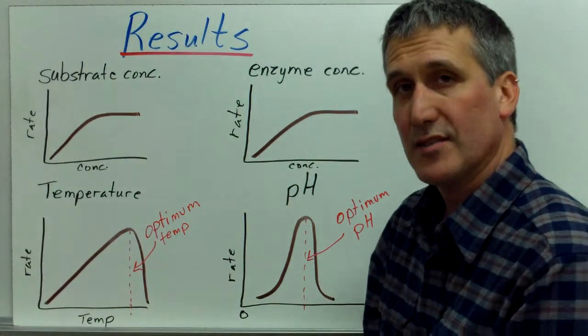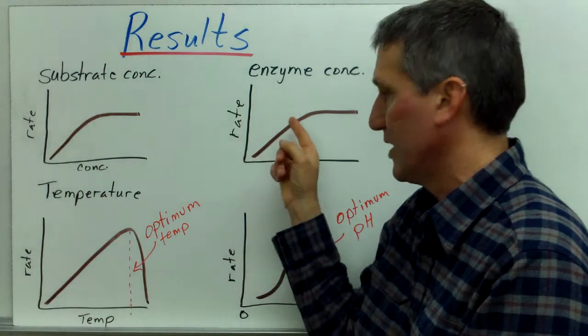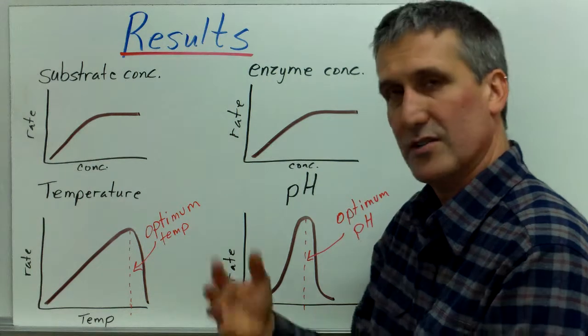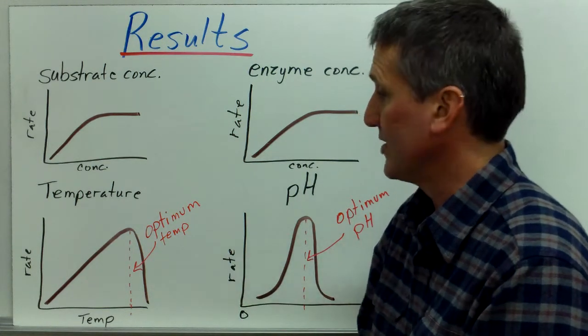The same thing with enzyme concentrations. It's the same relationship. As the enzyme concentration increases, the reaction rate increases to a certain point and then levels off because all the enzyme is being used and occupied by substrate as fast as it can, and it can't go any faster.